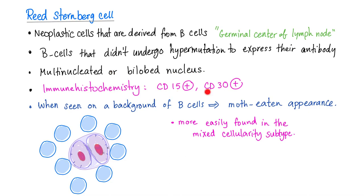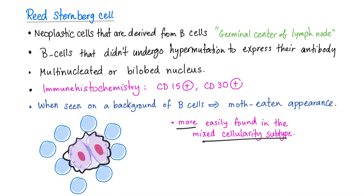RS cells are CD15 positive and CD30 positive. When you see the RS cell on a background of B cells, it gives you the moth-eaten appearance. RS cells are more easily found in the mixed cellularity subtype of Hodgkin's disease.